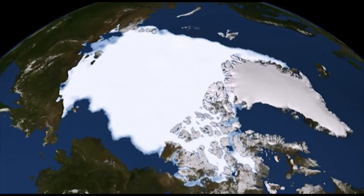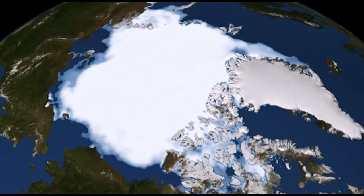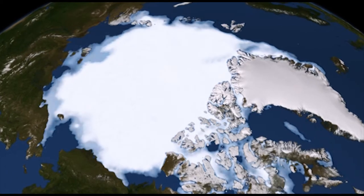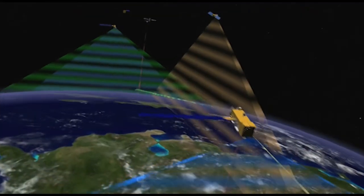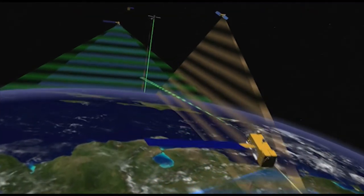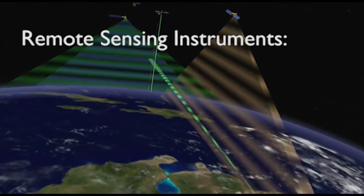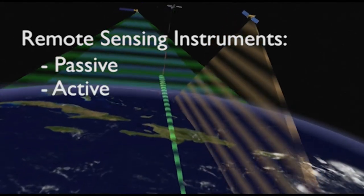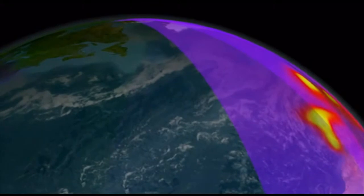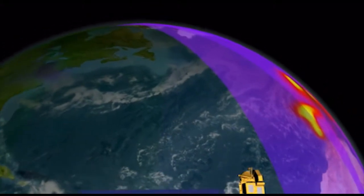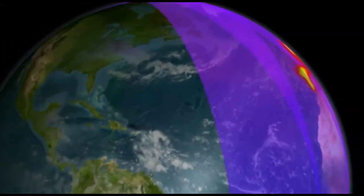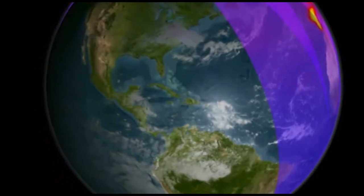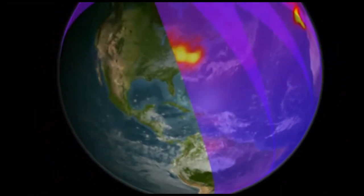Satellite remote sensing is especially useful over remote regions where it is difficult to collect data at the surface. There are many different types of instruments used in satellite remote sensing. Instruments are often referred to as passive or active remote sensing instruments. Passive instruments collect reflected and emitted radiation in a wide range of electromagnetic frequencies, including visible, infrared, and microwave frequencies.